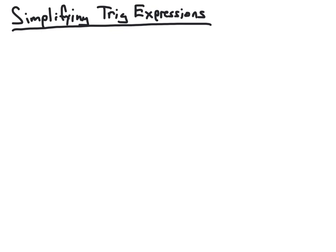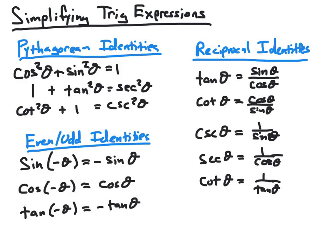We've already seen a number of trigonometric identities, and those include the following. This list is essentially broken up into three categories: the Pythagorean identities, the even and odd identities, and the reciprocal identities. We've talked about all of these identities before, either when defining the trig functions in terms of ratios of side lengths of right triangles, or in terms of using the unit circle.